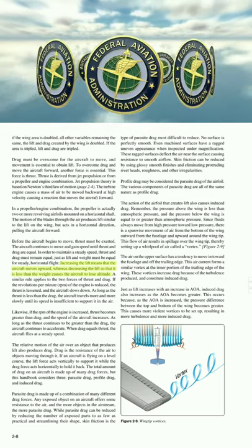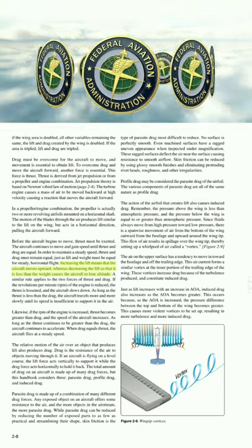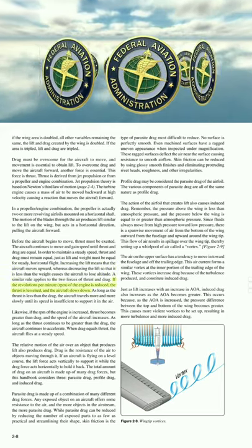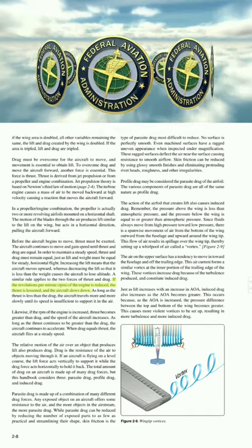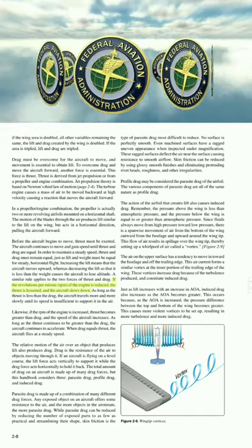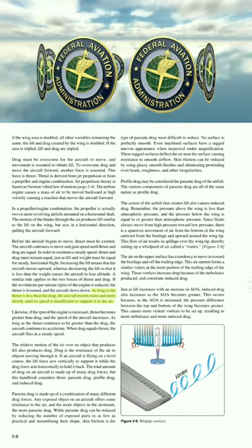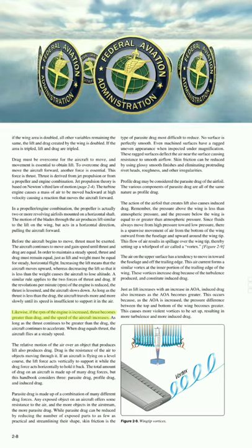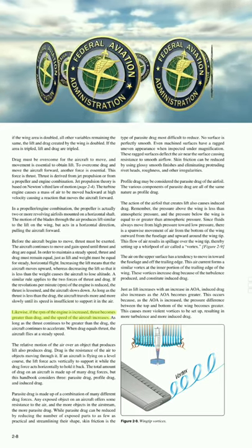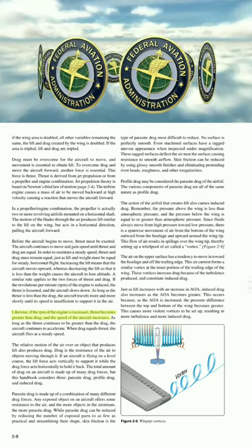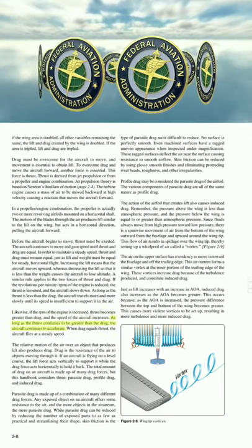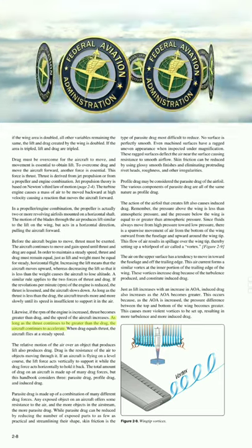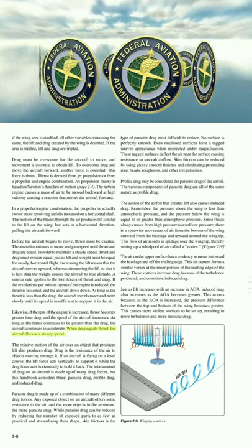A similar rule applies to thrust and drag. If the RPM of the engine is reduced, the thrust is lessened and the aircraft slows down. As long as thrust is less than drag, the aircraft travels more slowly until its speed is insufficient to support it in the air. If the RPM is increased, thrust becomes greater than drag and the speed of the aircraft increases. As long as thrust continues to be greater than drag, the aircraft continues to accelerate. When drag equals thrust, the aircraft flies at a steady speed.